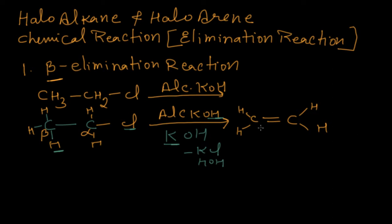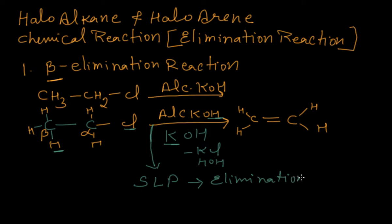This happens because alcoholic KOH is a solvent of low polarity. You must remember that a solvent of low polarity always leads to elimination. So by removal of one KCl molecule and one water molecule, we get the product ethene from chloroethane.